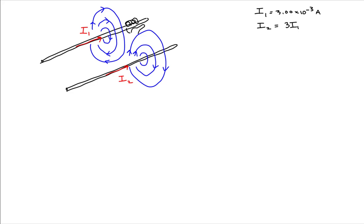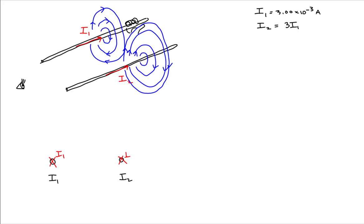These magnetic fields will overlap, giving us a net magnetic field at a point somewhere in between the two wires. Our goal is to find that point where the net magnetic field equals zero. Since this three-dimensional perspective can be hard to use, let's take a vantage point looking straight down the ends of these wires as the current moves away from us. Here is wire 1 on the left and wire 2 on the right. We'll indicate that current is going away from us by drawing an X, and we have currents I1 and I2.